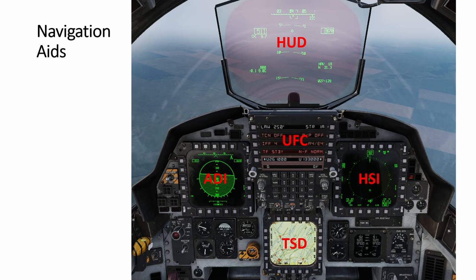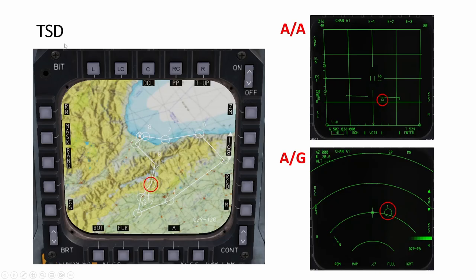For navigation aids we have five: the HUD, the UFC, the ADI, TSD, and HSI. The TSD is probably the easiest to understand — it's a moving map. The UFC lets you enter lots of numbers and letters. The HUD gives visual references. The HSI is a compass, very useful. The ADI mostly mirrors the HUD in terms of sky, earth, artificial horizon, and steering.